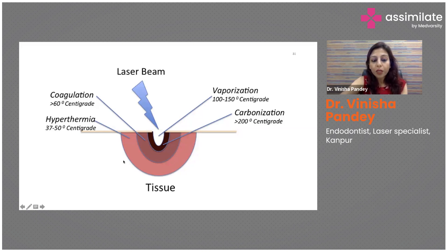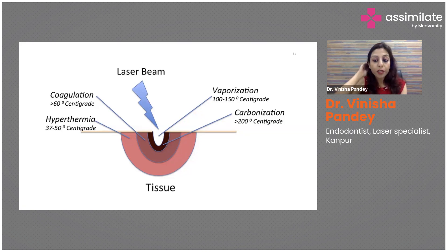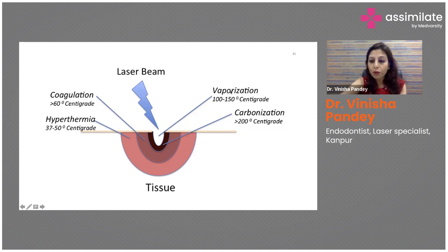Laser interaction with tissue produces four results. Hyperthermia occurs at 37 to 50 degrees centigrade. Above 60 degrees, coagulation takes place. If laser is applied continuously at higher temperatures, vaporization of water droplets occurs from the tissue, which ultimately leads to carbonization and char formation.